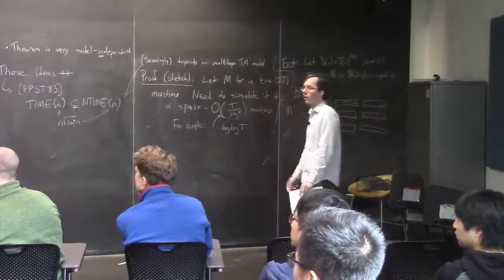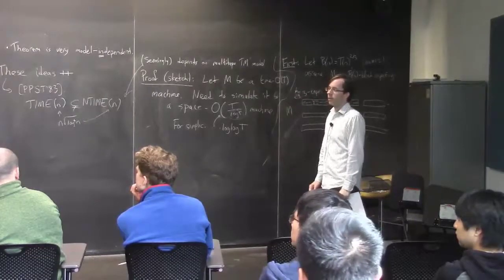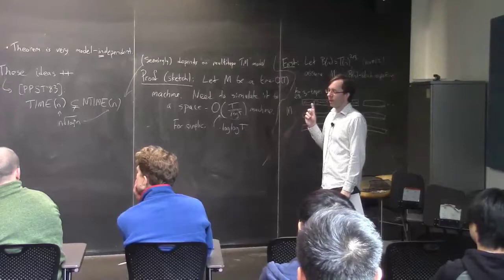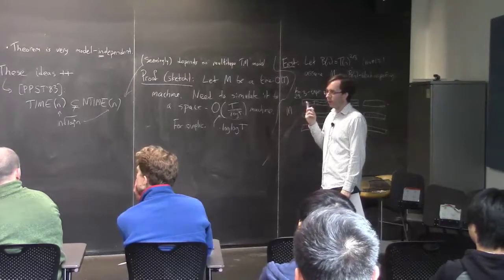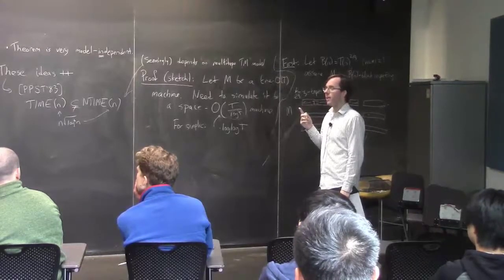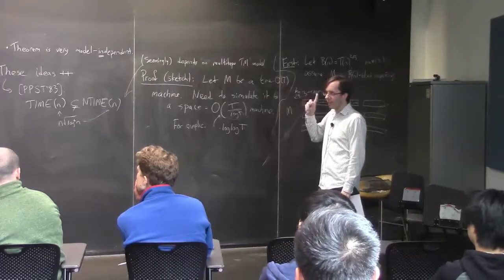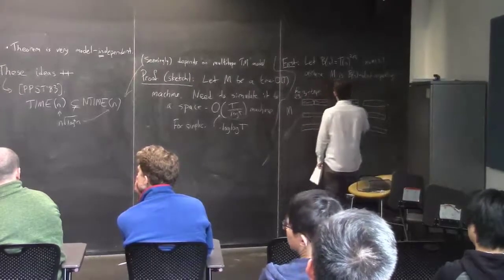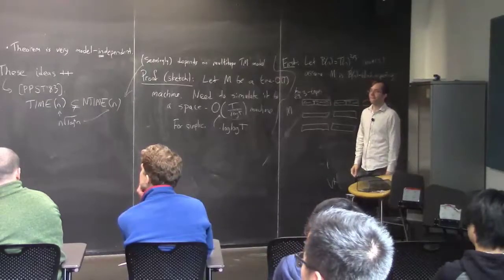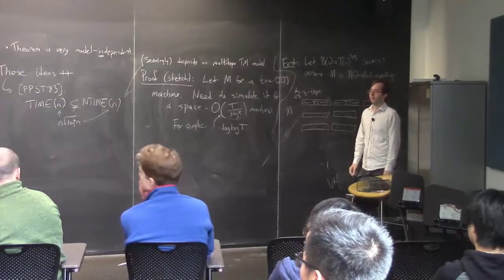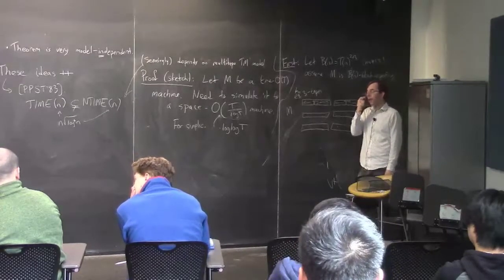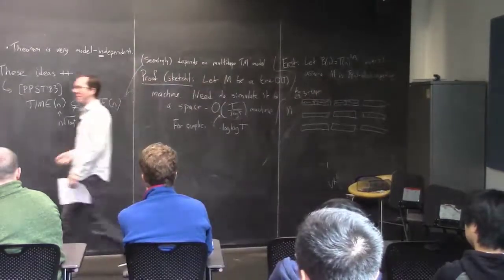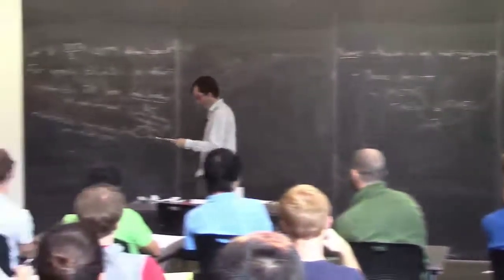Why don't we need to know the content on the next portion of the tape? Well, it's either blank or it's from the read-only input tape. But after epoch 1 — in general, something could have been written there at a previous stage. That's what we're going to get into now.